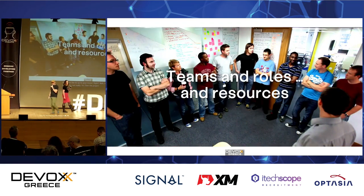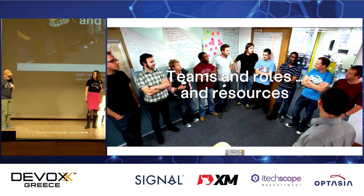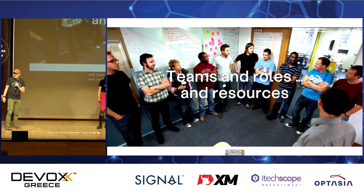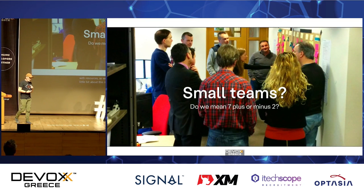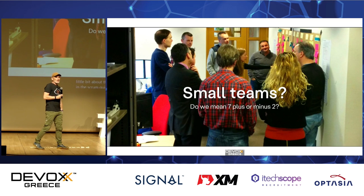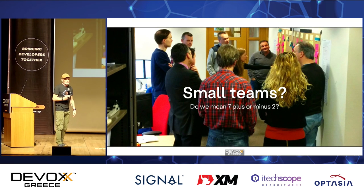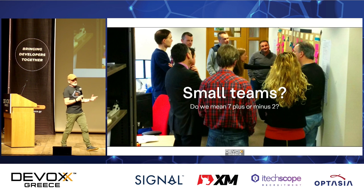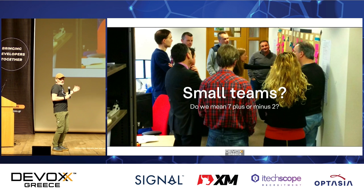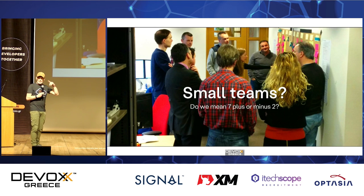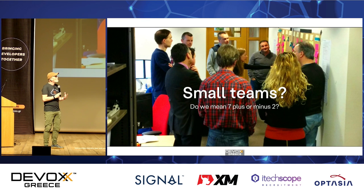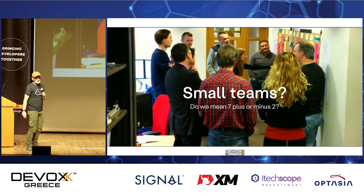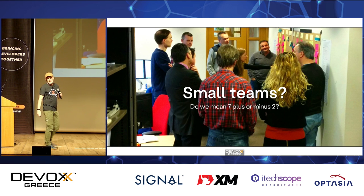The seven plus-or-minus-two team size originated in the Scrum Guide — the authors took it from research totally unrelated to team size; it was about the number of things you can keep in memory at the same time. Now the rest of the world thinks this is cut in stone. They changed it — went from six plus-or-minus-three, and now in the latest edition of the Scrum Guide it's less than 10 people. To be honest, it doesn't really matter what the team size is — put as many people in the team as you can, because that will slow you down.